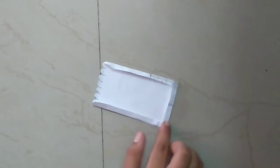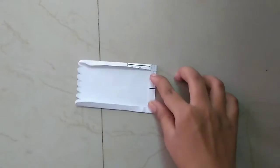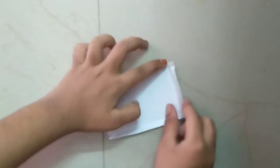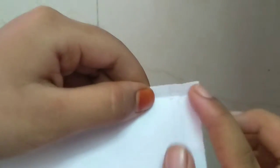Like this. So after folding it like this, open. Now you can see the small rectangle, so you need to cut that.